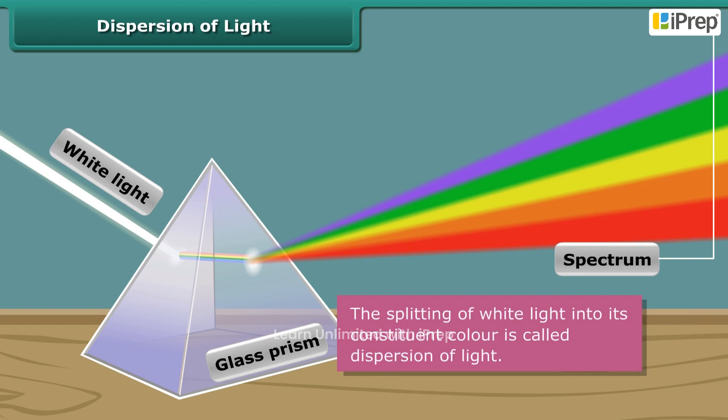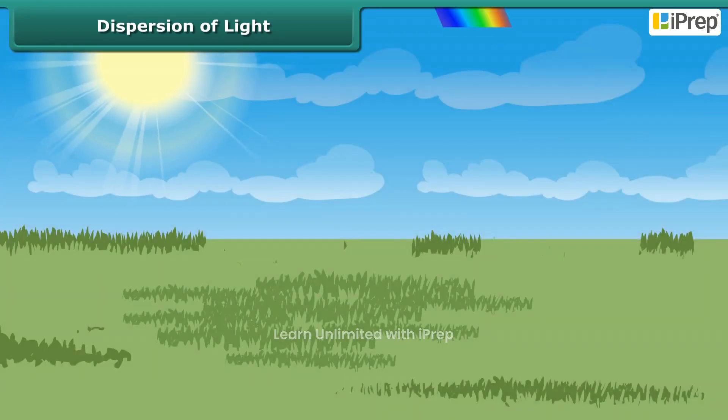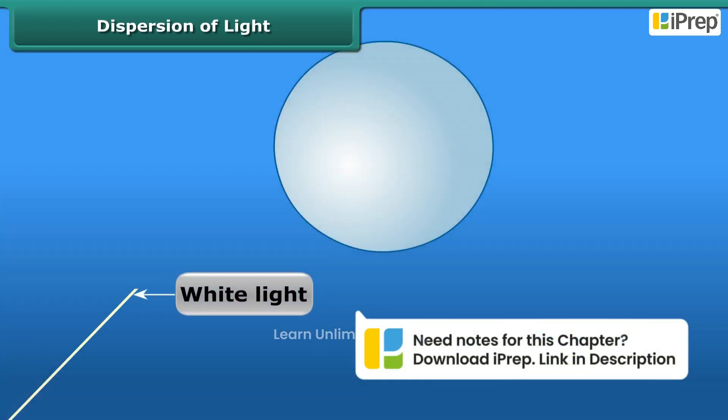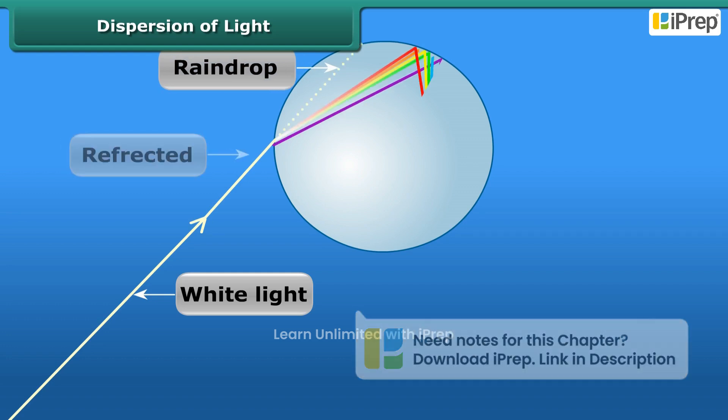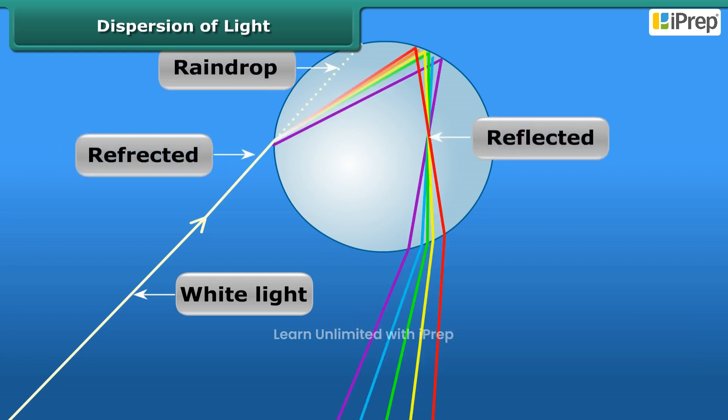Coming back to the rainbow, we can now say that the dispersion of white light passing through the water droplets formed the rainbow.